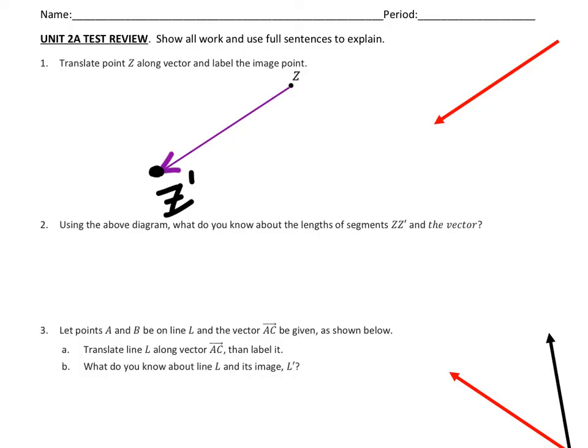Number two: use the same diagram to write a sentence about what we know about the lengths of Z, Z prime, and the vector. Since I duplicated that red vector into the purple one, they're the same length. If you felt the need to go beyond that, we can write that these two are also parallel.